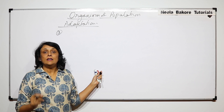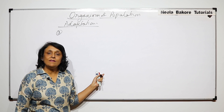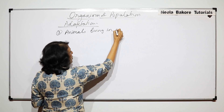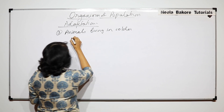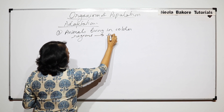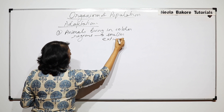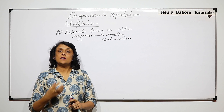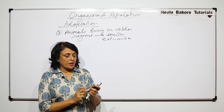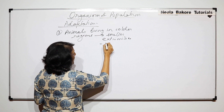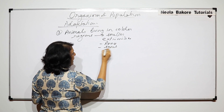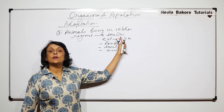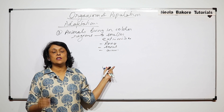The animals which are living in the colder regions have smaller extremities. Now what exactly do we mean by extremities? Extremities means the structures which are sort of protruding from the body. So we include pinna, snout, and even the arms. So the animals which are living in colder regions would have smaller pinna as compared to the animals living in the warmer region.